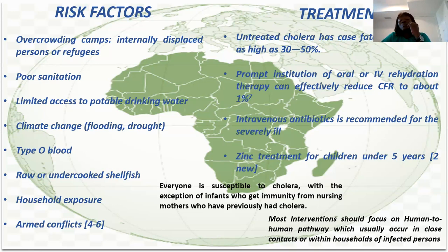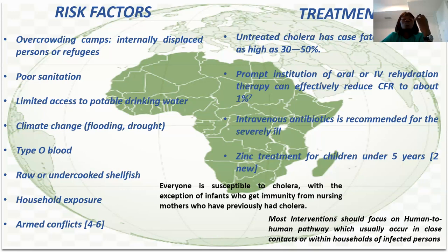Because cholera is a bacterial disease, it is treated with antibiotics. When the case is very serious, IV antibiotics are given. For children under five, zinc tablets are also given, because cholera most often causes diarrhea and vomiting, so keeping someone hydrated is important — rehydration therapy is provided to the person.